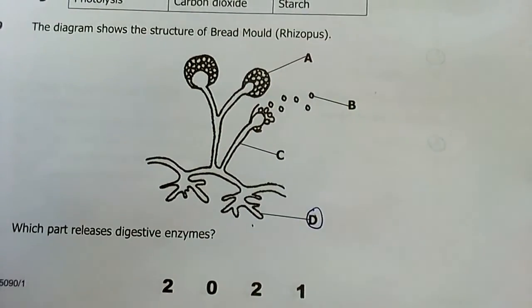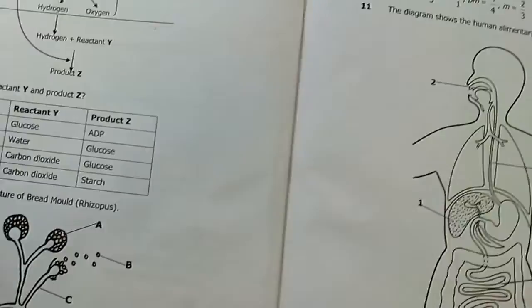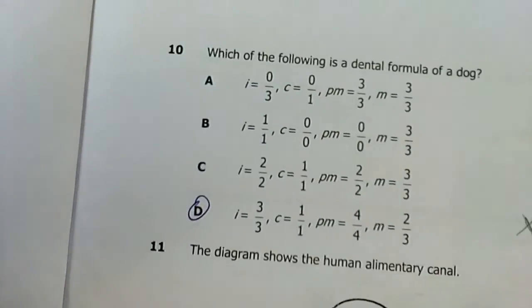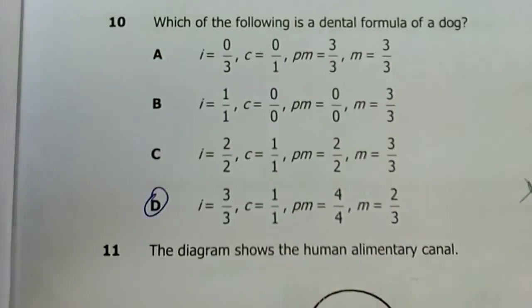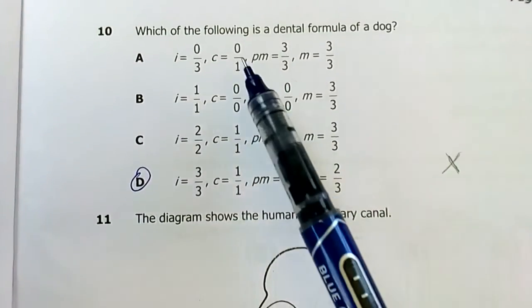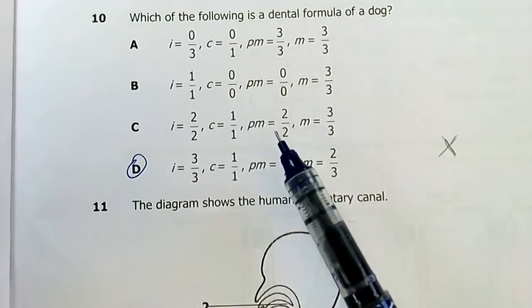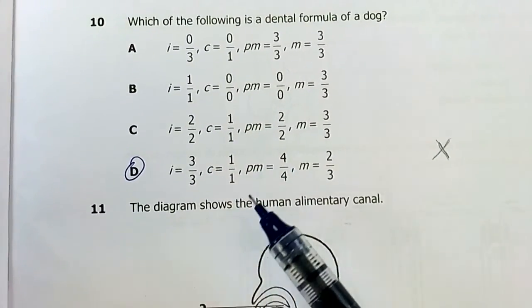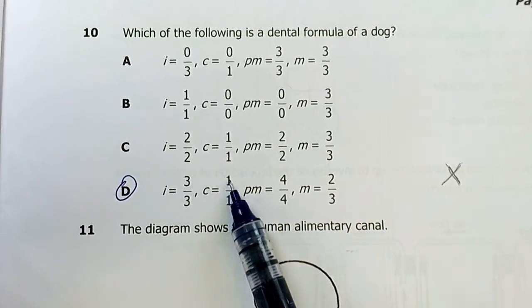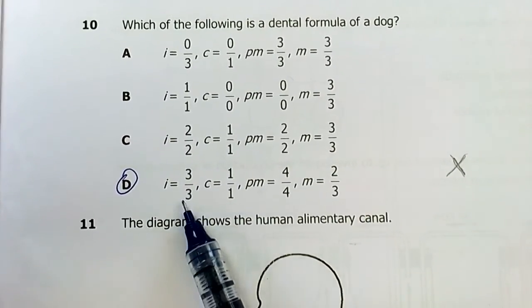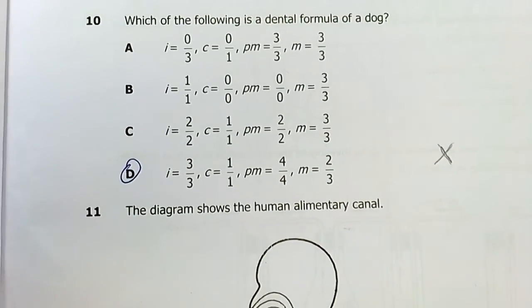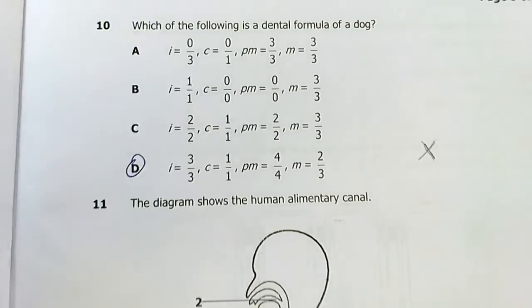Question ten: which of the following is the dental formula of a dog? You have to know the total number of teeth in a dog and the dentition. When you do your counting, dogs definitely have canines. The two contesting formulas are these two, and out of the two, this one has 42 teeth. You add the numerator 3 plus 1 plus 4 plus 2 times 2, then 3 plus 1 plus 4 plus 3 times 2, then add the answer for the top and bottom. Our answer is D. Dogs have 42 teeth.